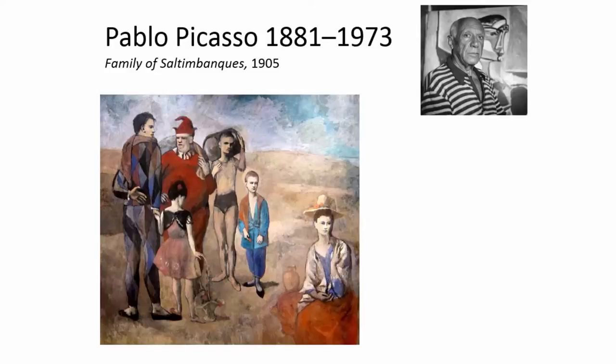He's known for a series of periods: starting out representationally with the blue period, then rose period, the African influences period, analytic cubism and synthetic cubism, also called the crystal period. So he reinvented himself many, many times. Early in his artistic career, he was interested in circus people, and this family of saltimbanques are people touring with the travelling circus.